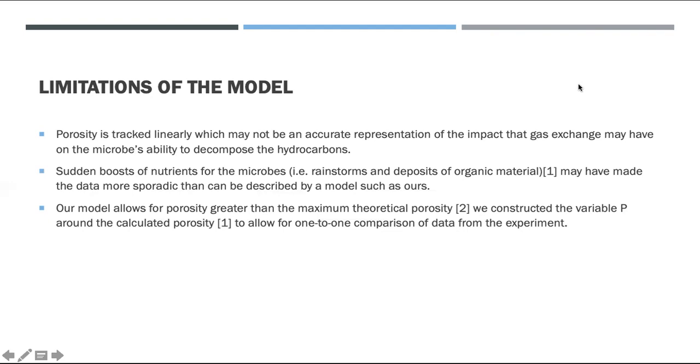Since our data is derived from the experiments of source 1, we also have the same limitations. One of the ones they cite in the paper is that the data is affected by sudden boosts of microbial activity, mainly due to boosts of nutrition, which can be attributed to rainstorms depositing nutrition to these microbes in the oil clumps, as well as deposits of organic material. It makes the data sporadic and maybe harder to describe by a model such as ours.